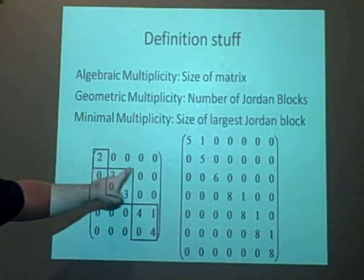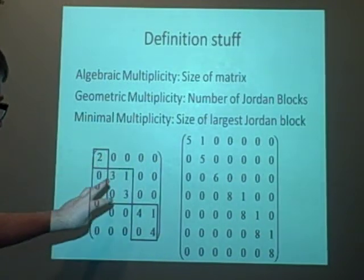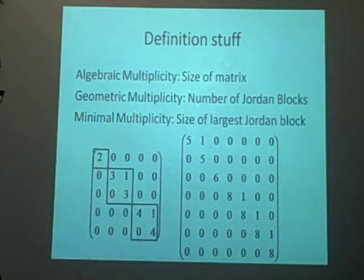For this one, the algebraic is 5, it's 5 across, the geometric is 3, or 3 blocks, and the minimum is 2, because the biggest one is 2 across.